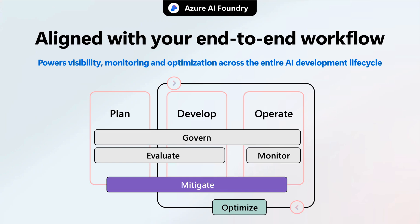A key strength of Azure AI Foundry is its comprehensive lifecycle support, spanning plan, develop, and operate phases. Across all these stages, governance, evaluation, and monitoring overlays ensure continuous compliance, visibility, and quality assurance. Risk mitigation is an ongoing process integrated into every step, not just an afterthought.